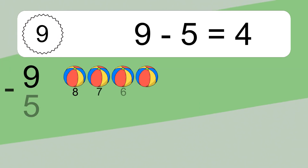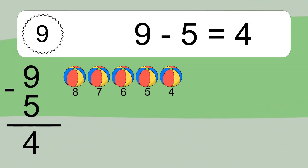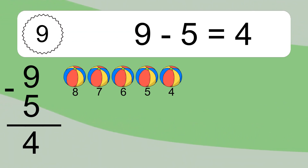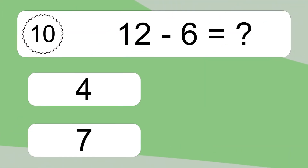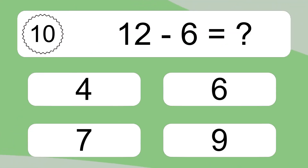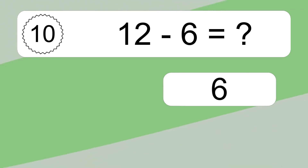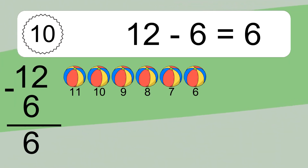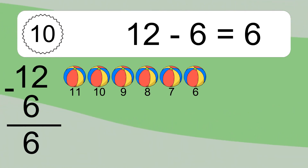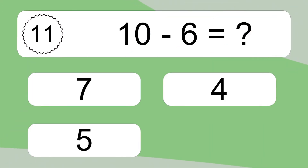Nine minus five equals what? Nine minus five equals four. Let's count it: eight, seven, six, five, four. Twelve minus six equals what? Twelve minus six equals six. Let's count it: eleven, ten, nine, eight, seven, six.